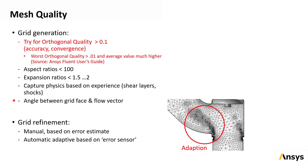Grid refinement can also be a good way to evaluate the mesh sensitivity of the solution. An example is shown at the right, where grid adaption is used to locally refine the mesh where it's estimated that errors may be higher. This kind of estimate is normally based on the gradients of the solution variables, and in Fluent, you can either manually refine the grid based on this, or make use of the automated grid refinement capability.